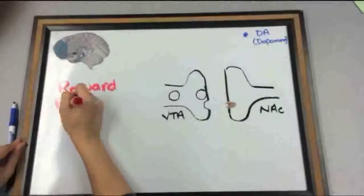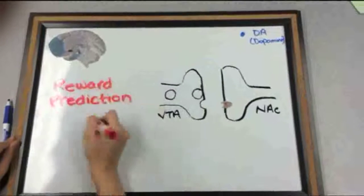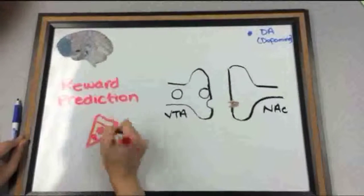The VTA is a part of the brain that releases the chemical dopamine on the NAC and therefore modulates the reward seeking behavior.